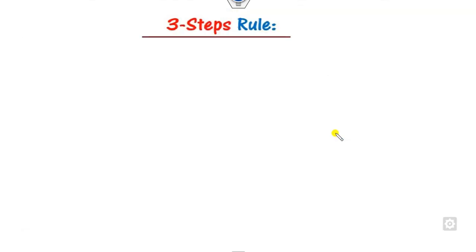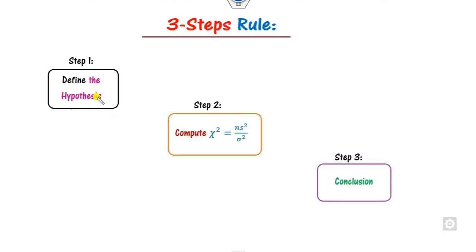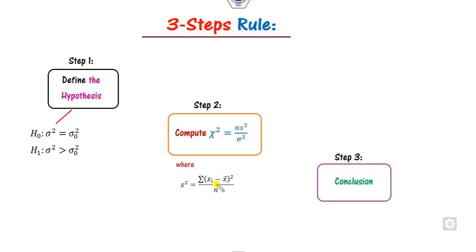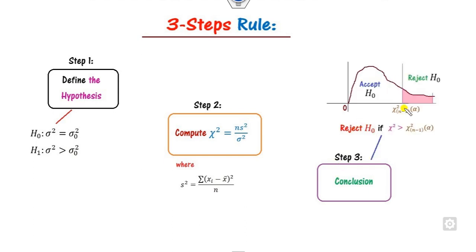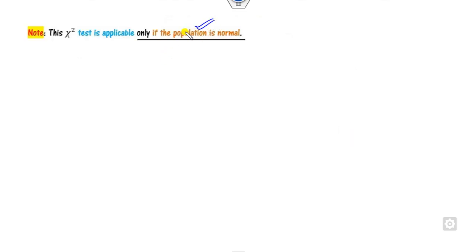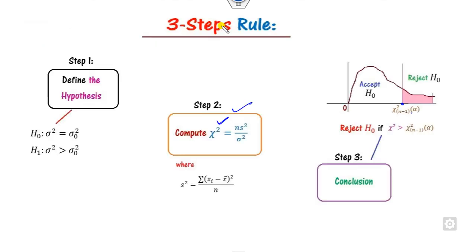In order to apply this chi-square test, we use the three-step rule. Step 1: define the hypothesis H0 and H1. Step 2: compute the chi-square statistic using χ² = (n-1)s²/σ₀², where s² is the sample variance. Step 3: draw the graph, compare the computed chi-square to the critical value, and decide to reject or fail to reject H0. Remember, this three-step rule is applicable only when the population is normal. If the population is not normal, this rule does not apply and we use other hypothesis tests.